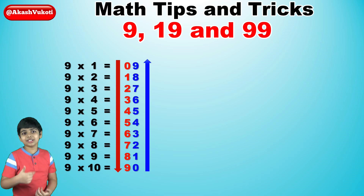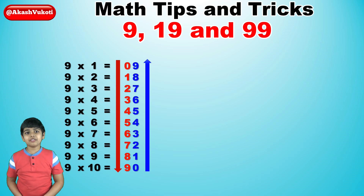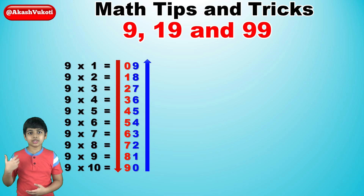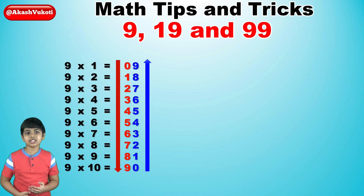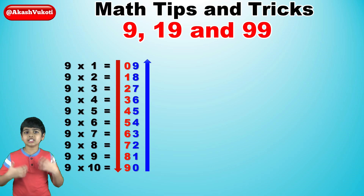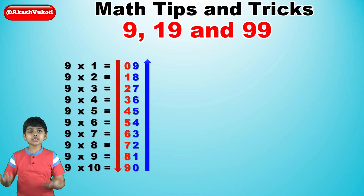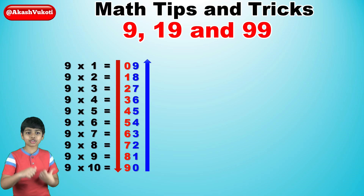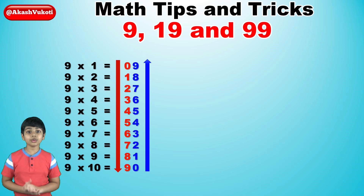Seriously, take a look. You have 9x1 is 9, times 2 is 18, times 3 is 27, 9x4 is 36, and so on and so on. And you can see that this trick actually works.